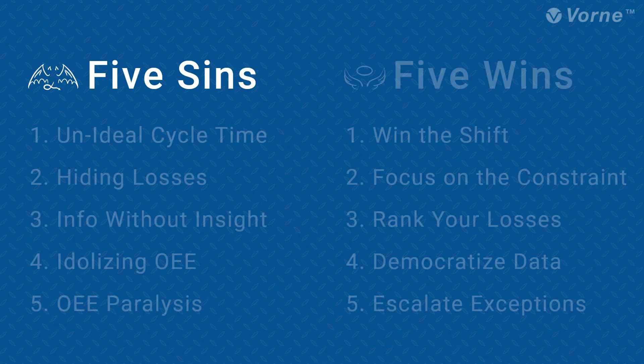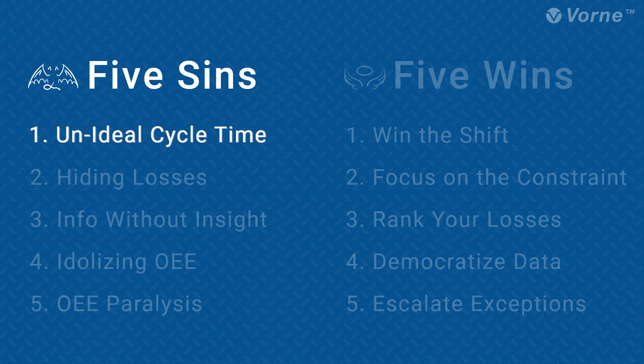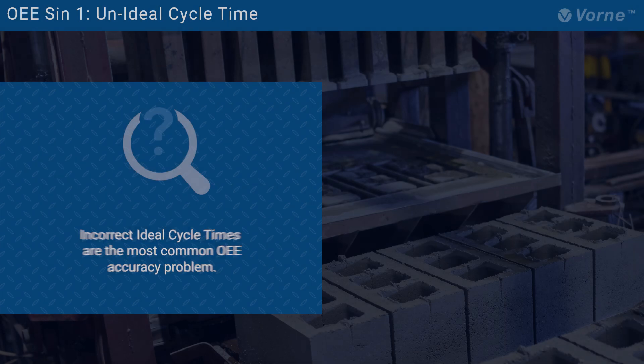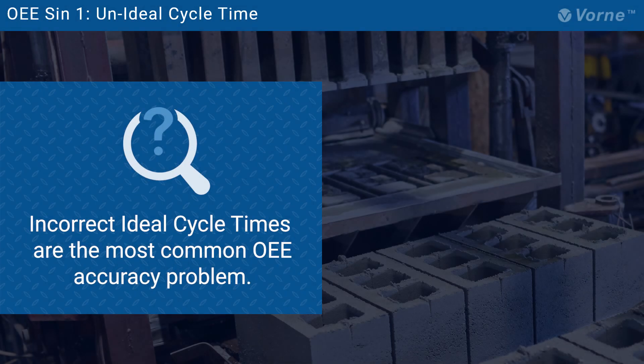The first deadly sin is unideal cycle time. Incorrect ideal cycle times are easily and by far the most common problem we encounter related to the accuracy of OEE data. This is an epically important sin because it happens so often and is so impactful to the quality of your data.